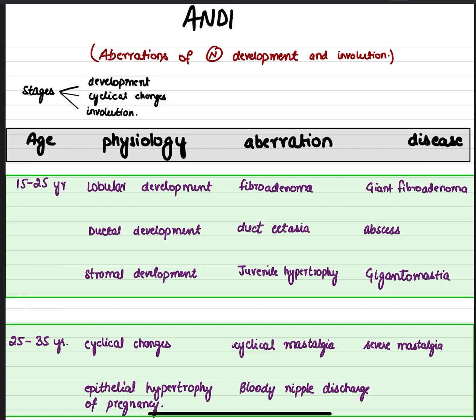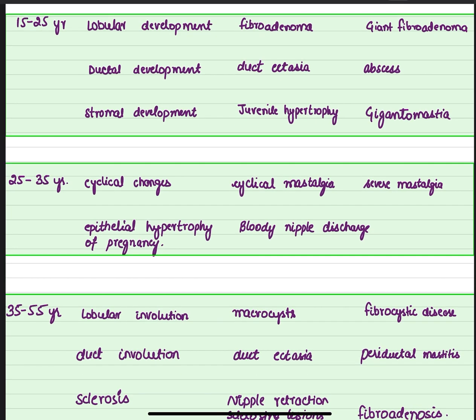Normally the breast undergoes a series of physiological changes. There might be aberrations in normal development that may lead to disease pathology. These changes occur according to age — that is 15 to 25 years, 25 to 35 years, and then 35 to 55 years.